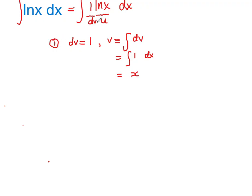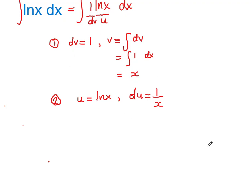The second thing to do once we've assigned dv and u is to use the term assigned as u, which is ln(x), to calculate du. du suggests that we are differentiating u. We know that the standard derivative of ln(x) is 1 divided by x, or 1 over x. So now we have all the components needed to complete the integration by parts: dv, v found by integrating dv, u, and du found by differentiating ln(x).